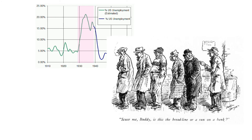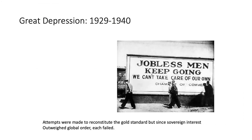An absolutely socially devastating crisis from 1929 to 1940 is where we typically place the Great Depression. Attempts were made to reconstitute the gold standard, create price stability, and get international trade and investment flows going again, but countries refused to cooperate with collective organization — even though that cooperation would have been in their best interests. Instead, they pursued national interests, and this defensive nationalist posture created policies that actually deepened and prolonged the depression.